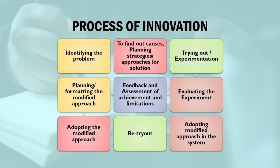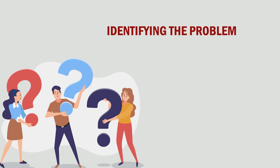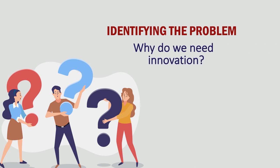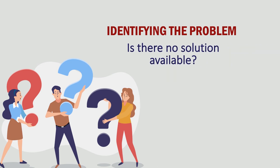Finally, let us focus on the process of innovation, which starts from identifying the problem and ends with the adoption and modification of the approach. The first step is identifying the problem. When we think about innovating, we first think: why do we need innovation? Is the problem we are facing new or unique? Then we try to find out — is there no solution available for this problem, or are solutions available but unable to resolve it?